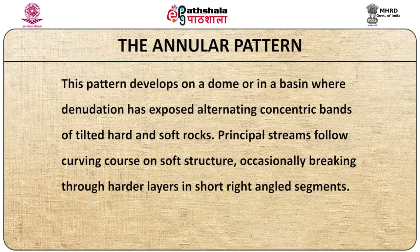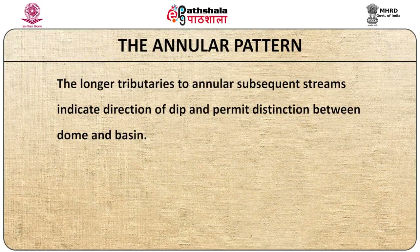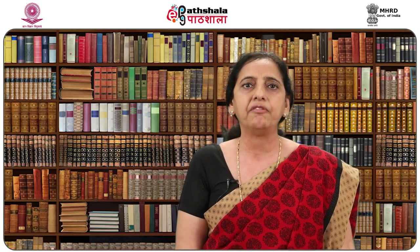Another drainage pattern identified by geomorphologists is the annular pattern. This pattern develops on a dome or in a basin where denudation has exposed alternating concentric bands of tilted hard and soft rocks. Principal streams follow curving courses on soft structure, occasionally breaking through harder layers in short right-angled segments. The longer tributaries to annular subsequent streams indicate direction of dip and permit distinction between dome and basin. Maverick Spring Dome in Wyoming is a dome of ancient crystalline rock pushed up through a sedimentary overlay, which after being deeply eroded exposes crystalline rock in higher parts of hills with upturned concentric sedimentary ridges known as hogbacks around its margins. Another example of annular pattern is seen in the racetrack or red valley, which has ring-like plains that nearly encircle the Black Hills.